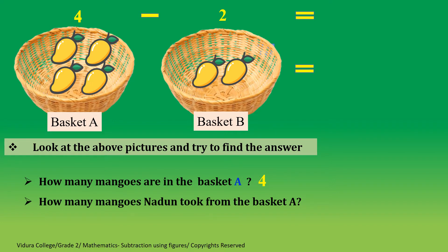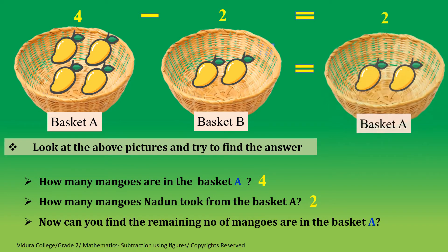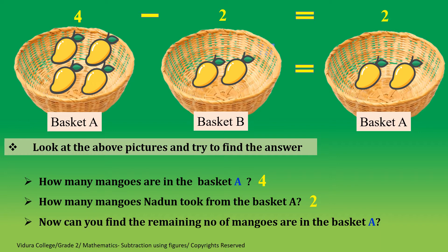How many mangoes did Nadun take from basket A? 2 mangoes. So 4 minus 2 is the problem. We have to find out how many mangoes are remaining in basket A when Nadun took 2 mangoes out of 4. Can you find the remaining number? 4 minus 2 — yes, the answer is 2 mangoes. So the number of mangoes remaining in basket A is 2.